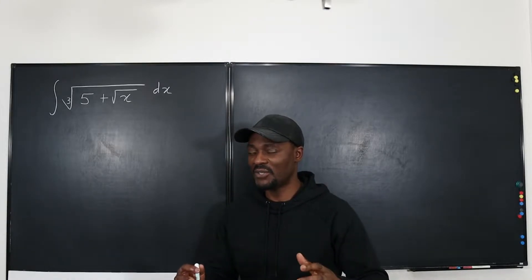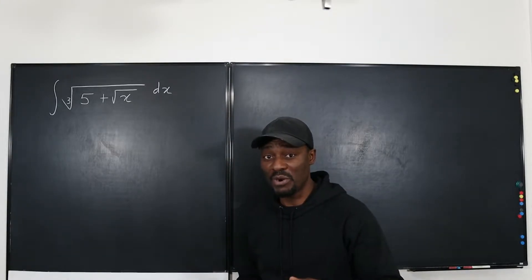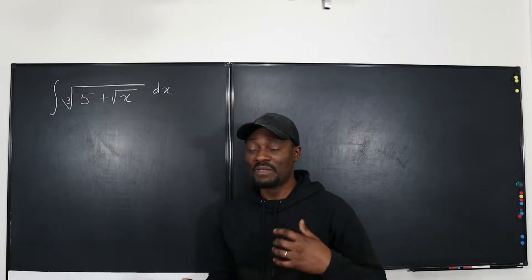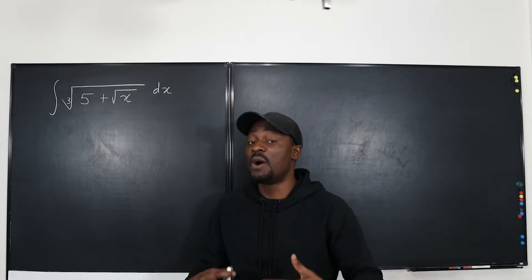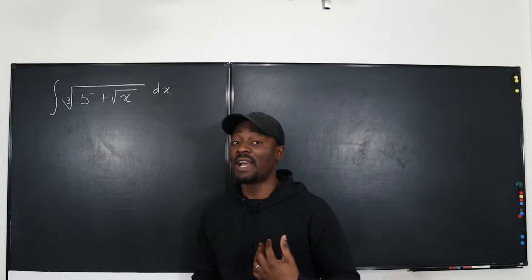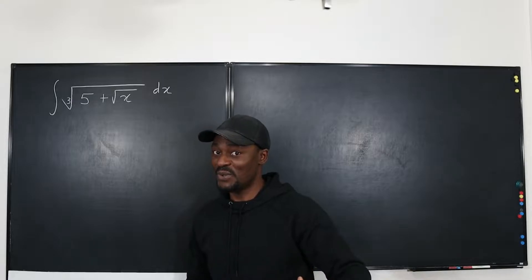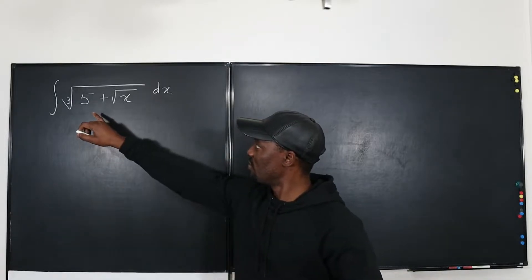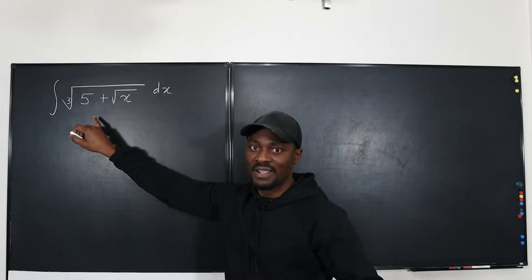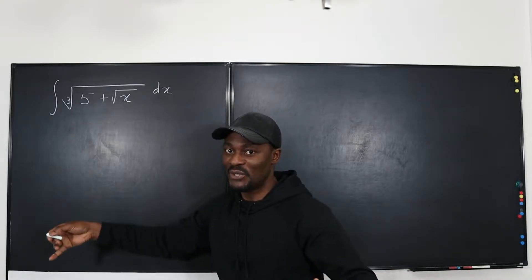So let's focus our minds on u substitution. The only problem you might have or the only difference you might have in our approach is what we choose to be our u. For me, I like taking everything under the square root sign to be the u for my u substitution. So we go to the problem. Oh, there are two square root signs. So which one should I choose for my u?